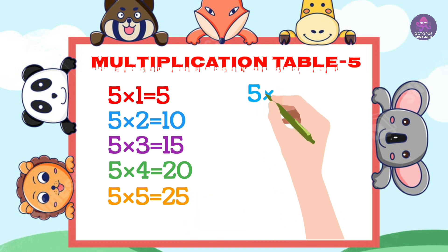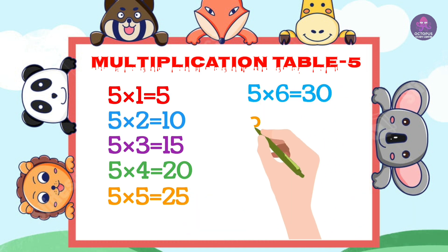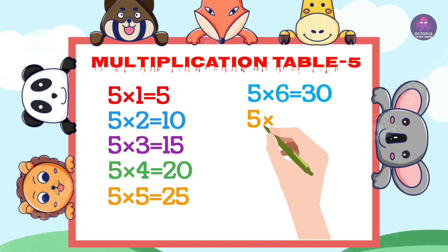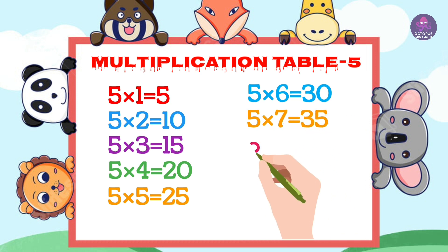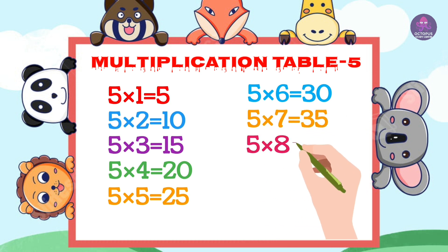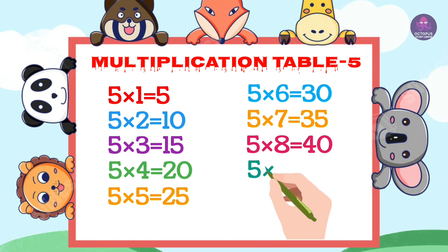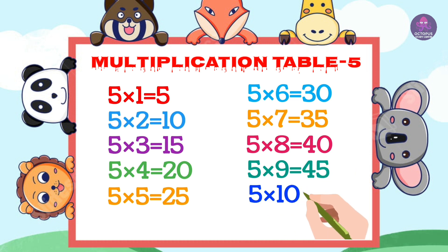5 6s are 30, 5 7s are 35, 5 8s are 40, 5 9s are 45, 5 10s are 50.